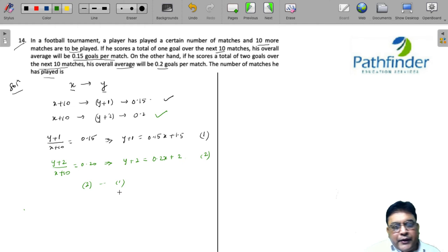On subtracting equation 1 from 2, you will get 0.5 equals 0.05X, which means X equals 10 matches. So the number of matches he has played is equal to 10.